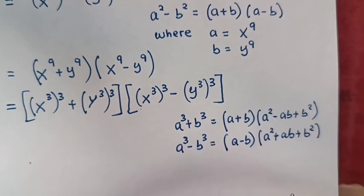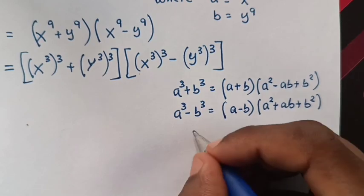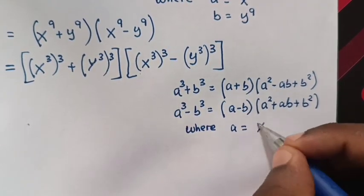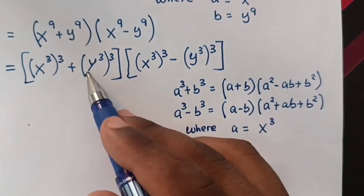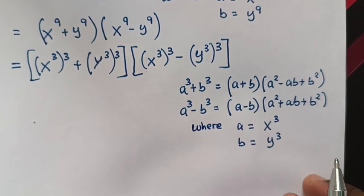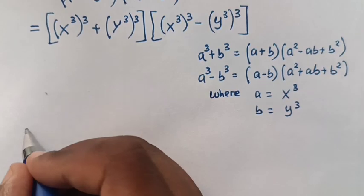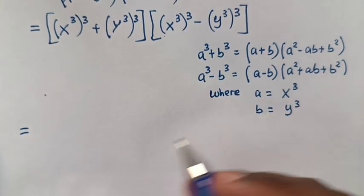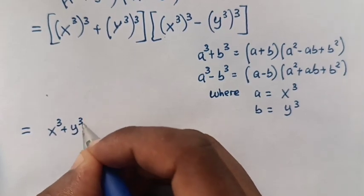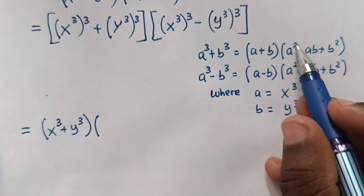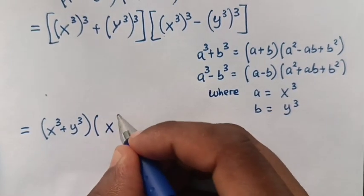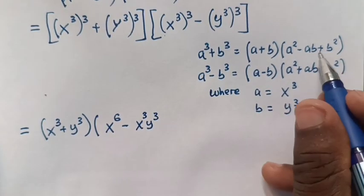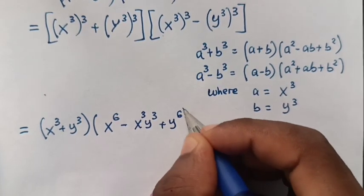From this formula, a is equal to x power 3 and b is equal to y power 3. When we substitute, the first part gives (a plus b) which is (x power 3 plus y power 3), times (a squared) which is x power 6, minus (a times b) which is x power 3 times y power 3, plus (b squared) which is y power 6.